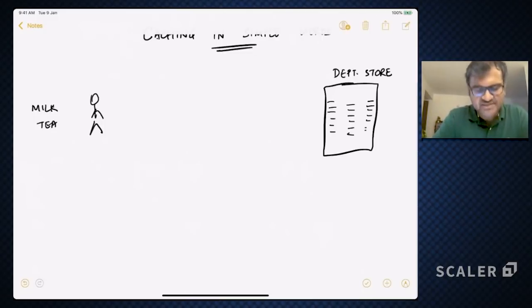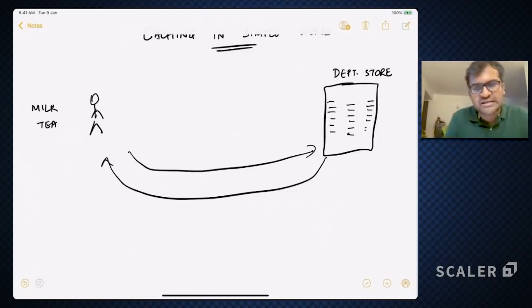Alright, so let's imagine that you want to make milk tea. One obvious ingredient of milk tea is milk itself, and milk I find in most grocery stores, department stores that are around me. So one obvious way whenever I'm making milk tea is that I go to the department store, fetch milk from here, and then make my milk tea. This to and fro process ends up taking a lot of time.